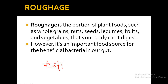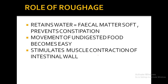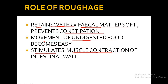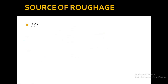Roughage is an important food source and also helps the beneficial bacteria in our gut. The role of roughage: it retains water, which keeps the fecal matter soft and prevents constipation. It also helps in the movement of undigested food and stimulates the muscle contraction of the intestinal wall.